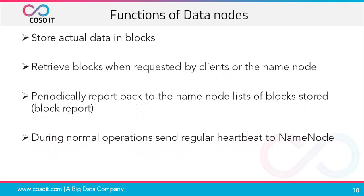Looking at the functions of data nodes: a data node actually stores the data in blocks and retrieves blocks when requested by clients or the name node. It periodically reports back to the name node with a list of all the blocks it has stored, which is called the block report.